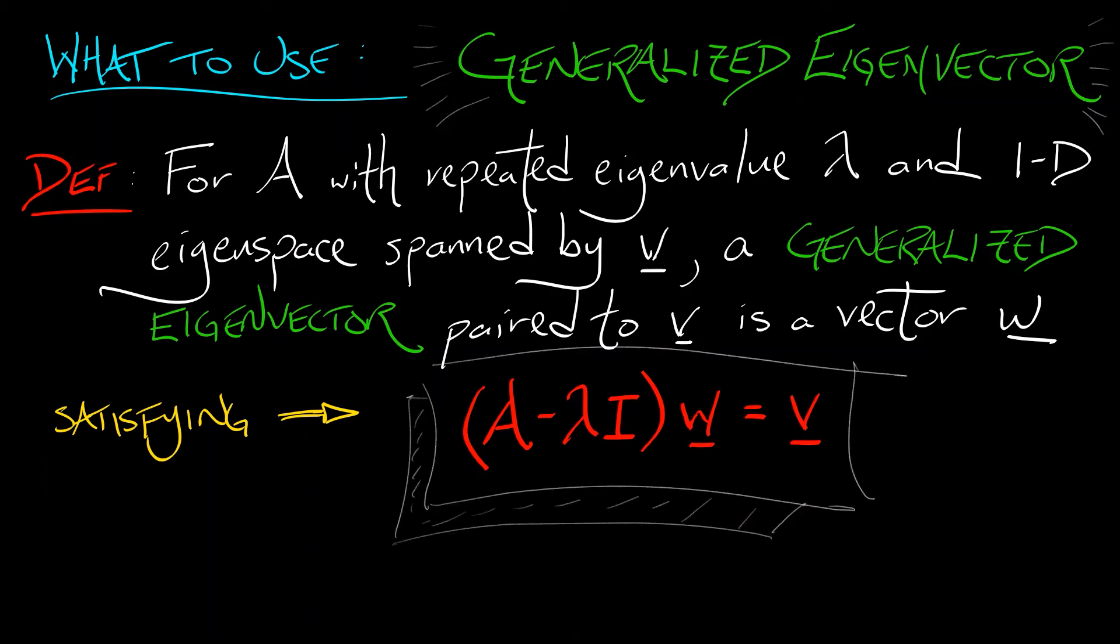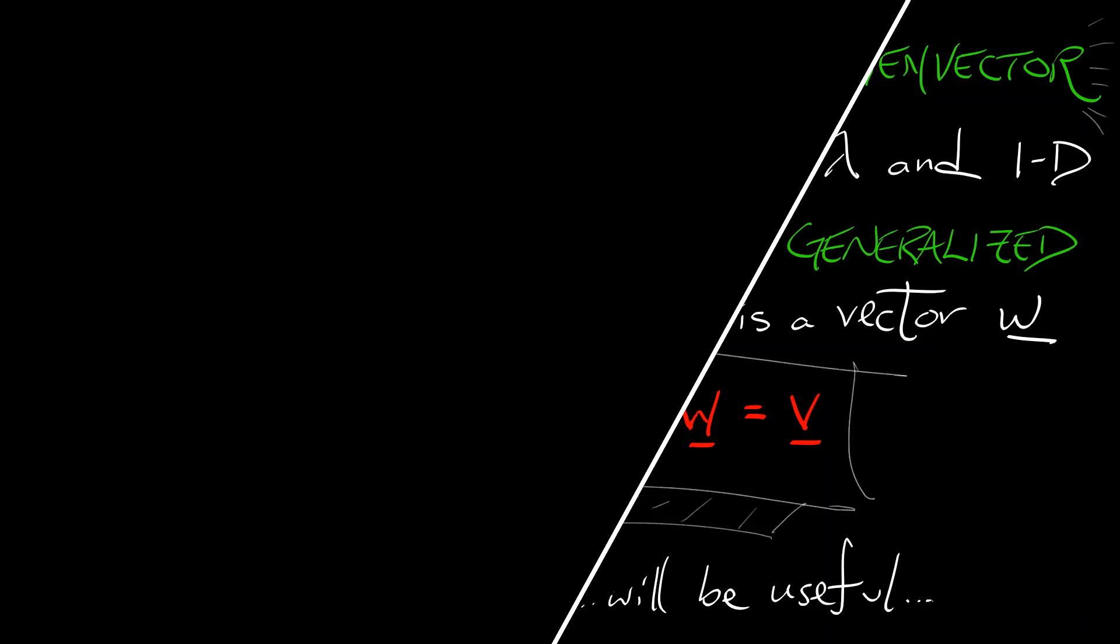That's kind of weird. Why are we doing that? It's not going to make a lot of sense yet, so stick with me. What I want you to do if you have never seen this before is to remember it, because we are going to use it. So then, do you remember it? I remember: (A - λI)W = V. That is what defines the generalized eigenvector W that goes with V.